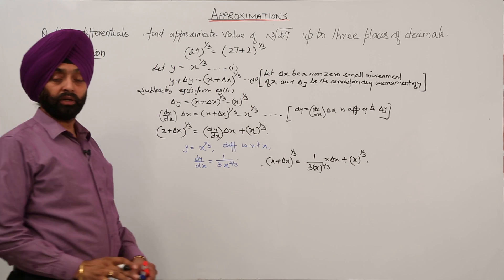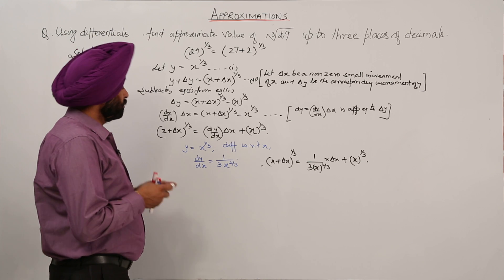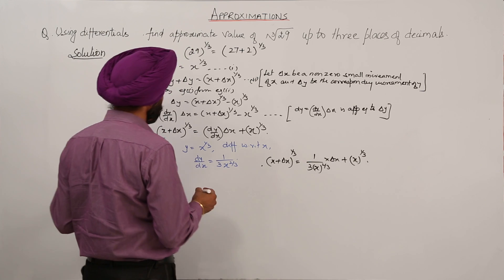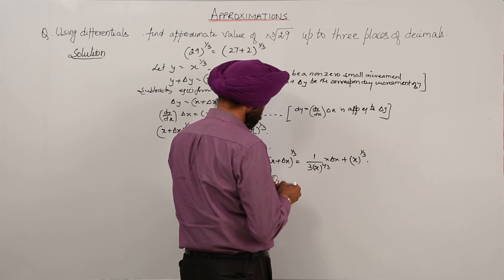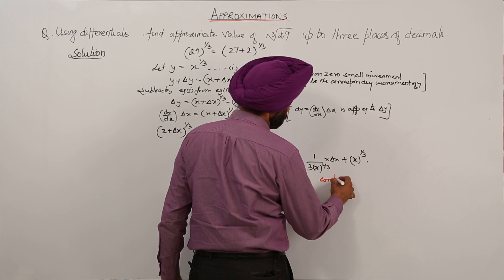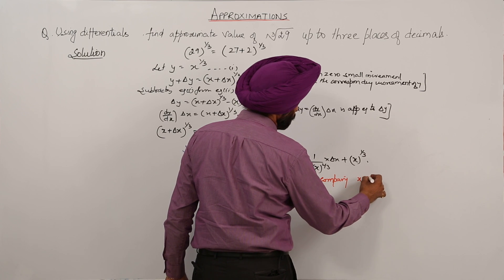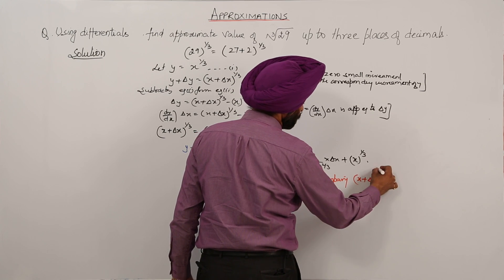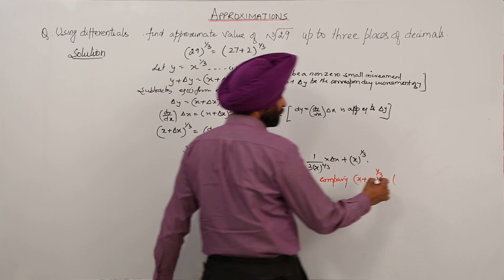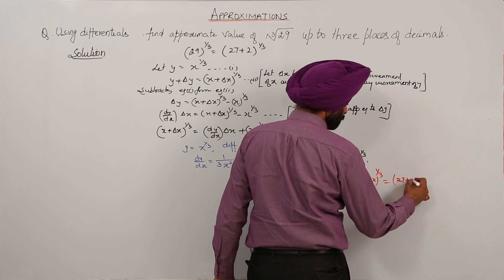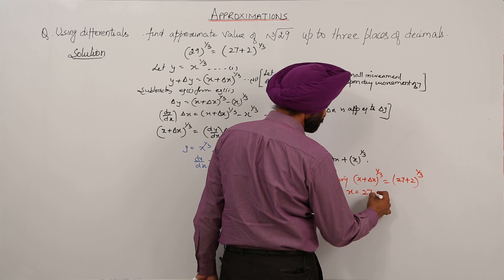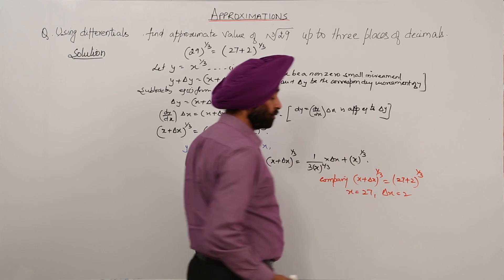Up to here the normal steps are done. Now what is x and what is delta x? Comparing (x plus delta x) raised to power 1/3 with what we assumed — 27 plus 2, raised to power 1/3 — we get x equal to 27 and delta x equal to 2.